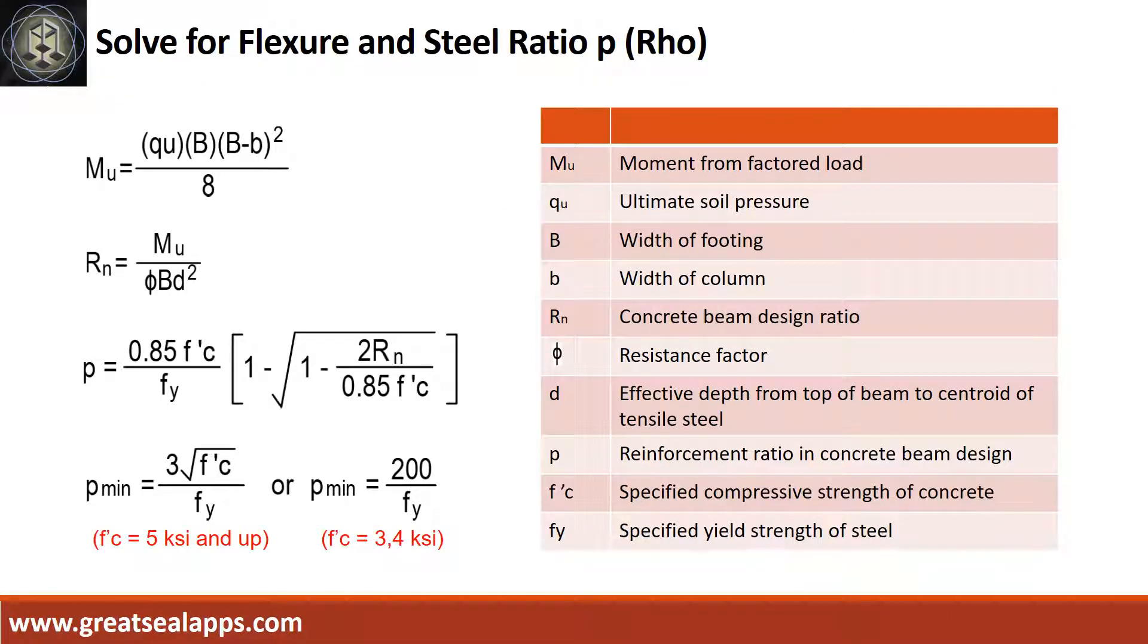Solve the maximum moment from assumed footing width and column width. Then get the concrete beam design ratio RN to solve the reinforcement ratio rho and check against ACI minimum.